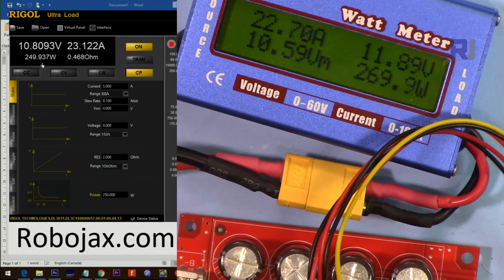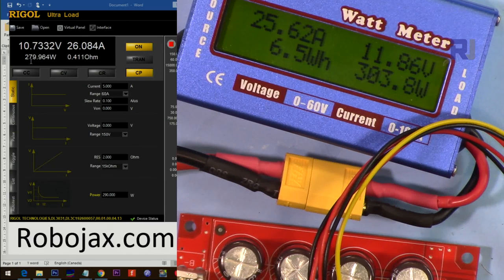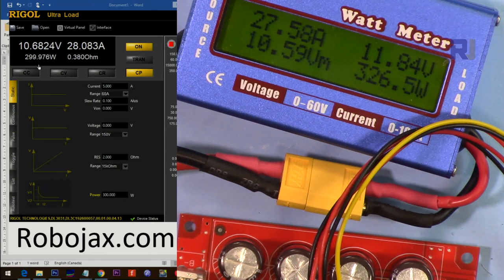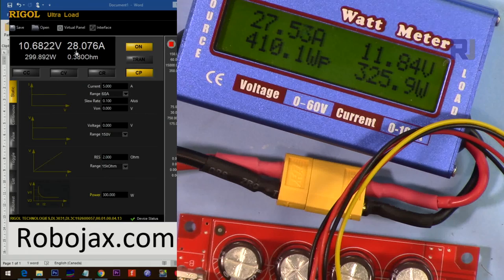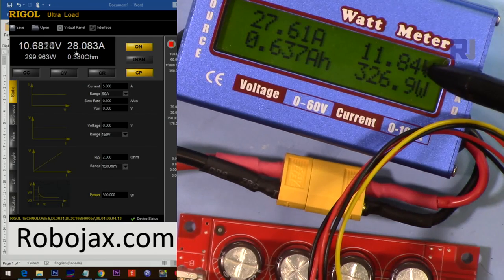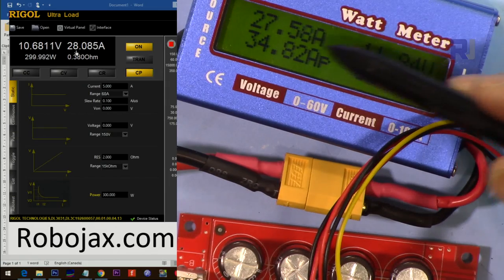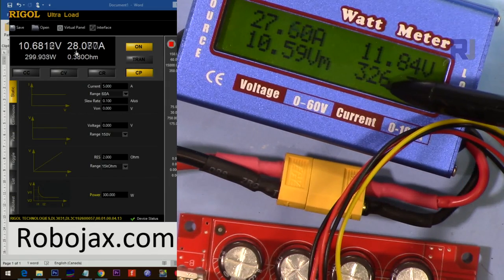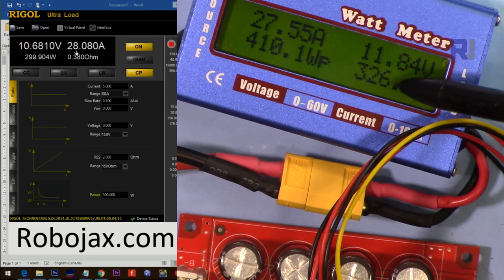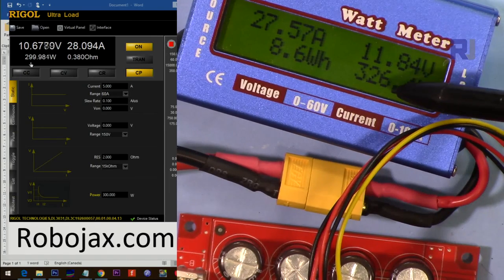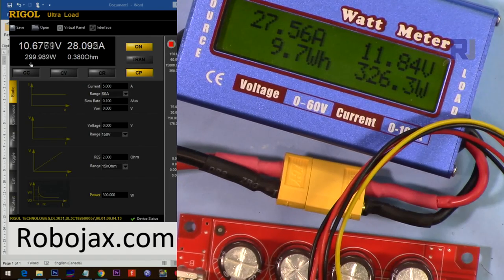Let's go for 300 watt. Now it's 300 watt. Input is 27.5 ampere and 326 watt input and we see 300 watt output. Now let's go to 350.